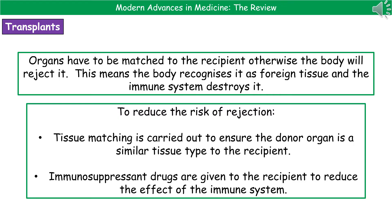To help reduce the risk of rejection we do two things. Firstly, we carry out tissue matching, which makes sure the donor organ is a similar tissue type to the recipient, thereby reducing the risk of the body recognizing it as foreign. Secondly, we use immunosuppressant drugs which reduce the effect of the immune system, suppressing it so it is not able to reject the organ.